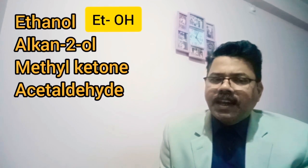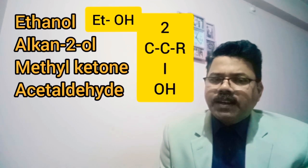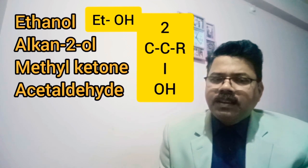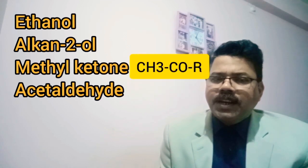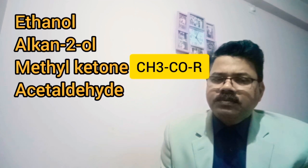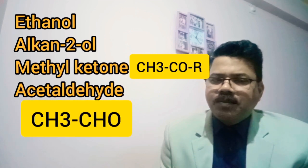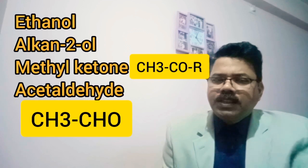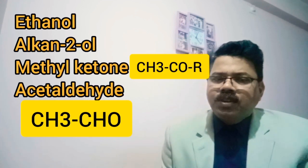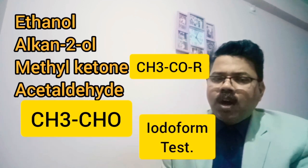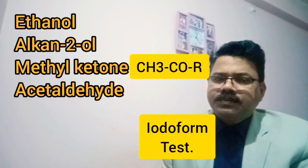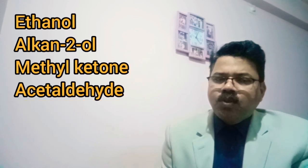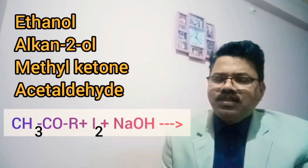I want to tell you one more thing. The compounds written on the screen — ethanol, alcohols where the OH group is connected to the number 2 position, methyl ketones or ketones having the CH₃CO group, and acetaldehyde — all of these compounds will show a positive iodoform test.